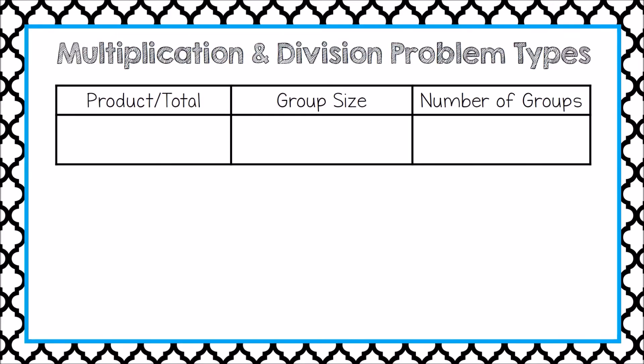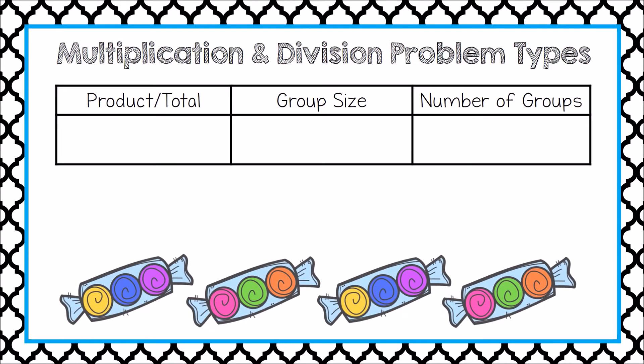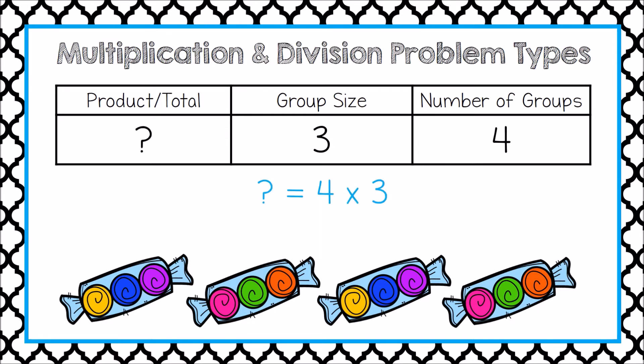For example, Dina has four packs of candies. How many candies does she have? We know the number of groups is four, and we know the size of each group is three candies. We just don't know the total amount. This can be seen as a multiplication problem.